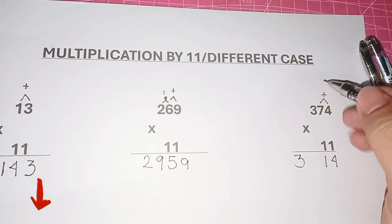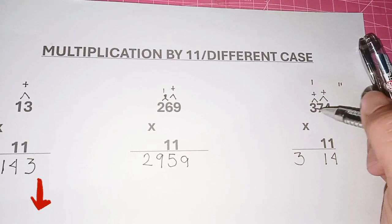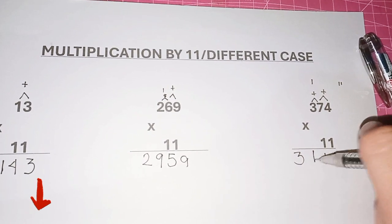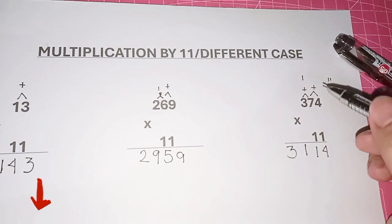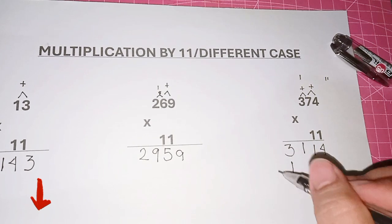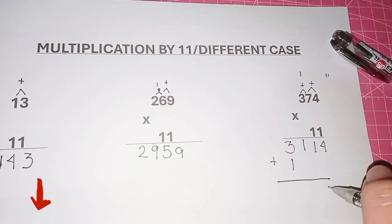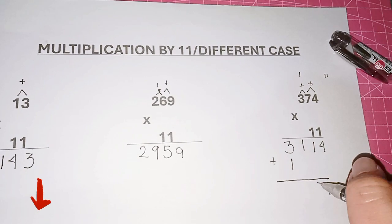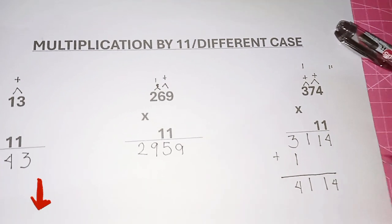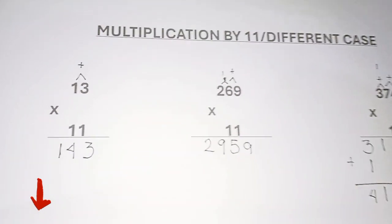Since seven plus four equals 11, write the one and carry the other one. Then three plus seven is 10, plus the carry one gives 11 again — write the one and carry. Adding four, one, one and then three plus one gives four. Write one under the three — this is the different carry case.